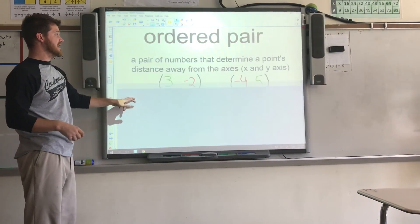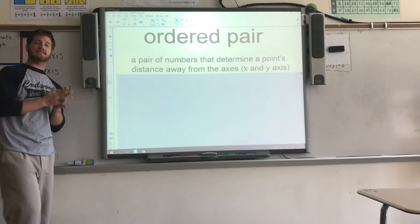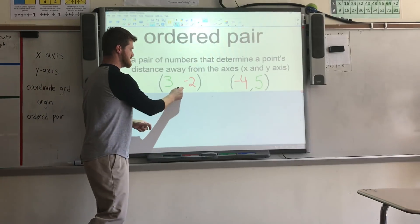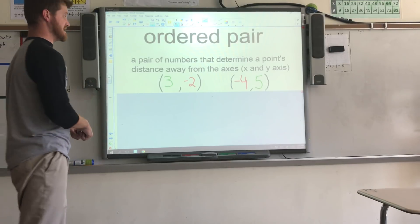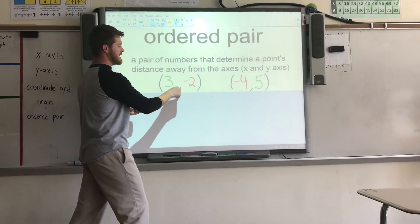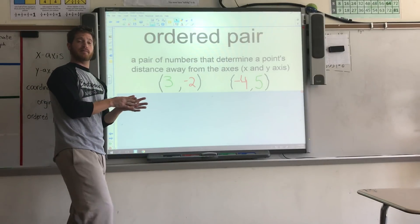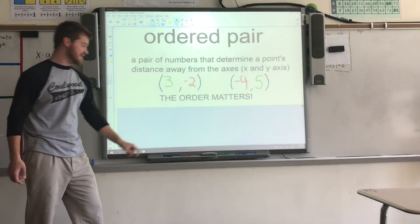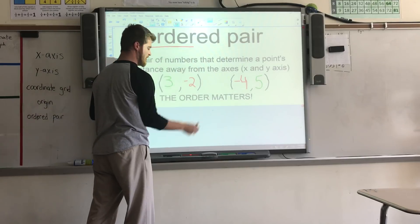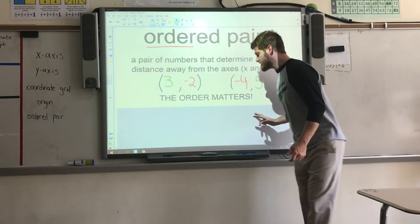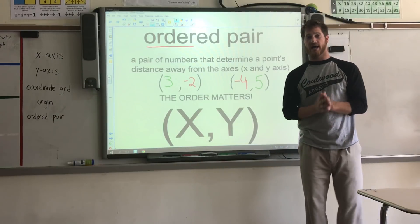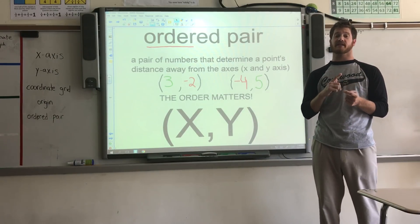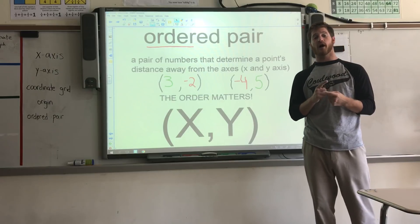An ordered pair is a pair of numbers that determine a point's distance away from the axes. They're always separated by a comma and always inside parentheses. The order matters — hence why we say ordered pairs. It's always listed as x comma y, which means we always move on the x-axis before we move on the y-axis. This means we will always be moving left or right first, before we move up or down.